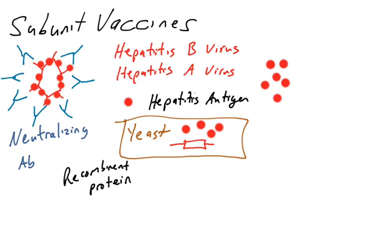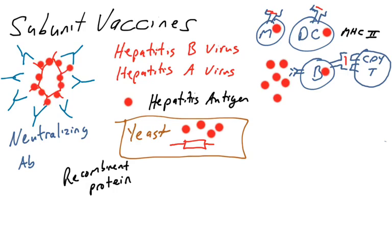This recombinant surface antigen from the hepatitis virus will hopefully be recognized by some naive B cell with its B cell receptor. It'll be taken in by B cells, be taken in by dendritic cells and macrophages, either by phagocytosis or pinocytosis. This will hopefully provoke a CD4 T cell immune response. We've got antigen presentation via MHC class II molecules. And if this is the case and B cells have recognized this protein,